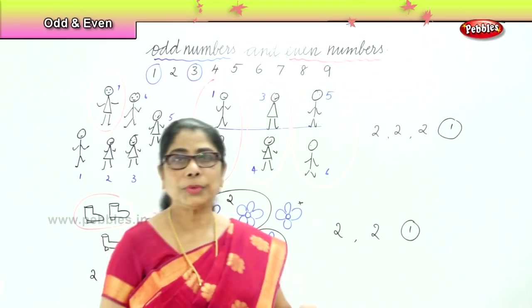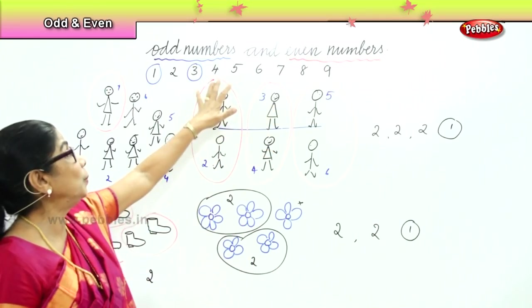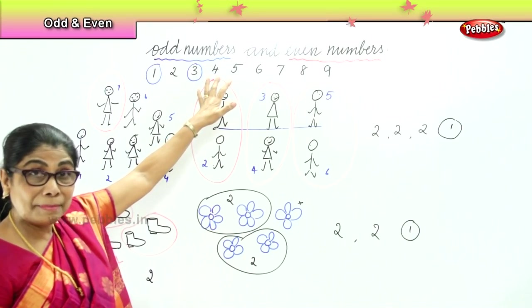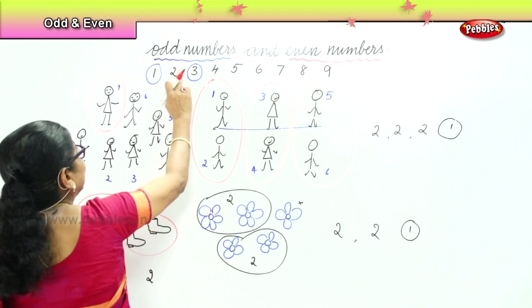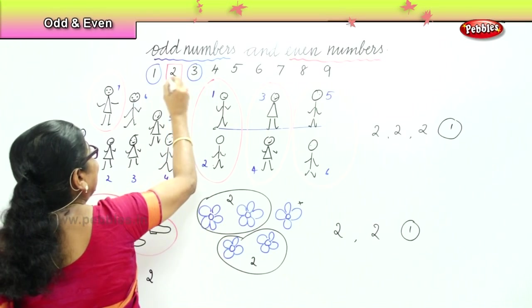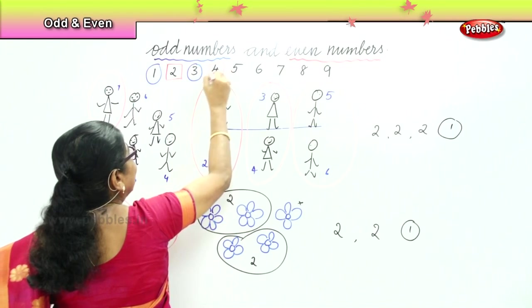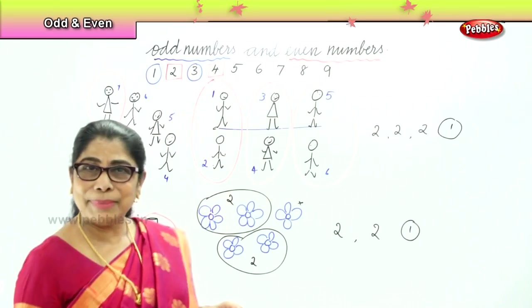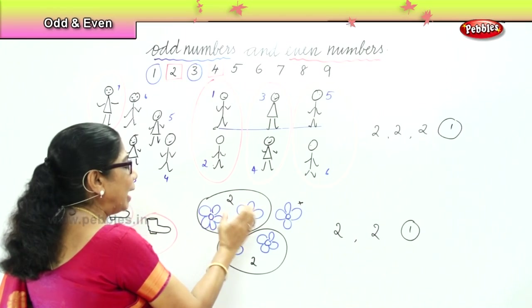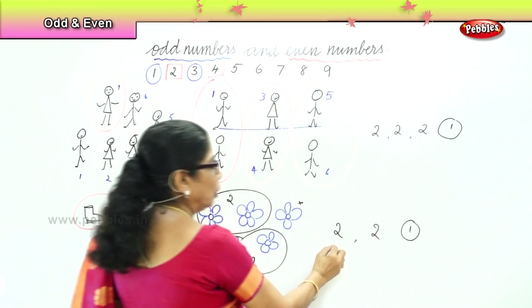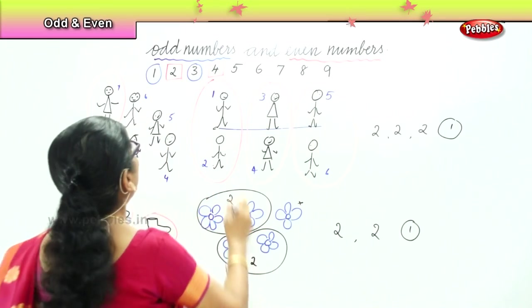What about four? One, two, three, four — you can be paired up, so we call that an even number. Now let's look at five: one, two, three, four, five — two and two and one left out. Two and two and one left out. Therefore, five is an odd number.